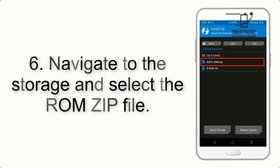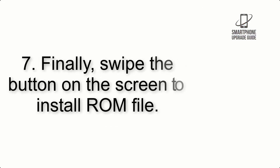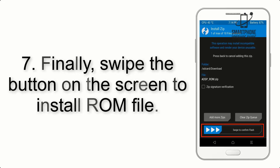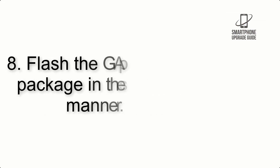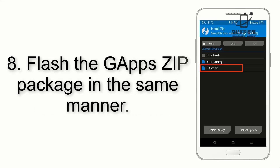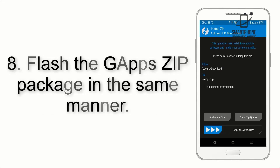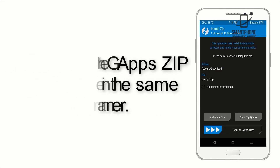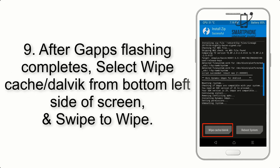Step 6: Navigate to the storage and select the ROM zip file. Step 7: Finally, swipe the button on the screen to install the ROM file. Step 8: Flash the G apps zip package in the same manner.